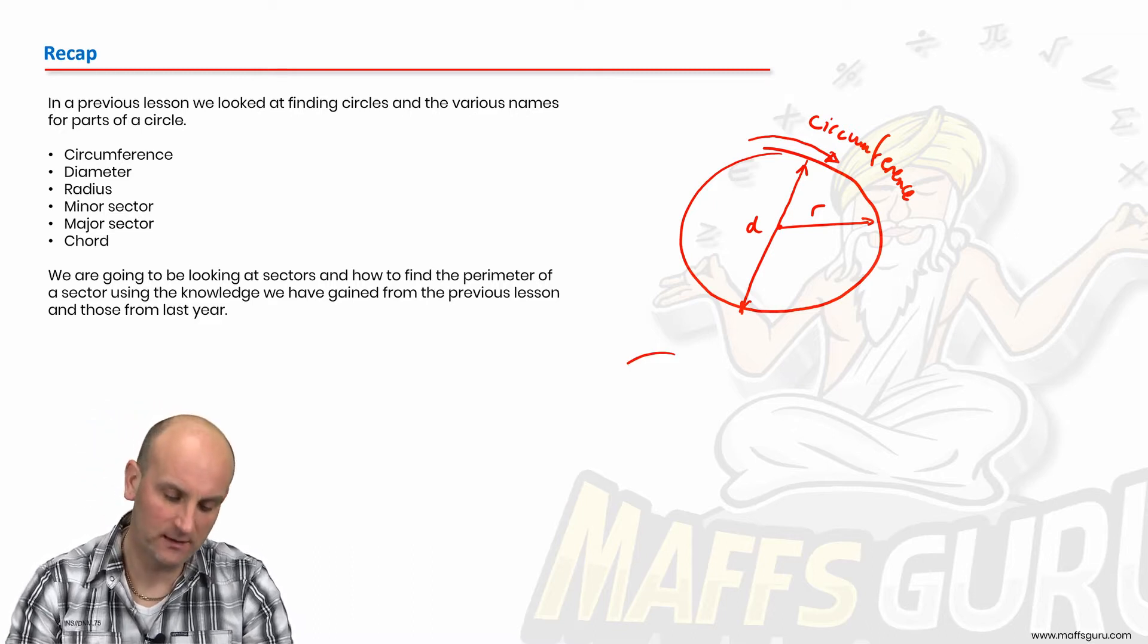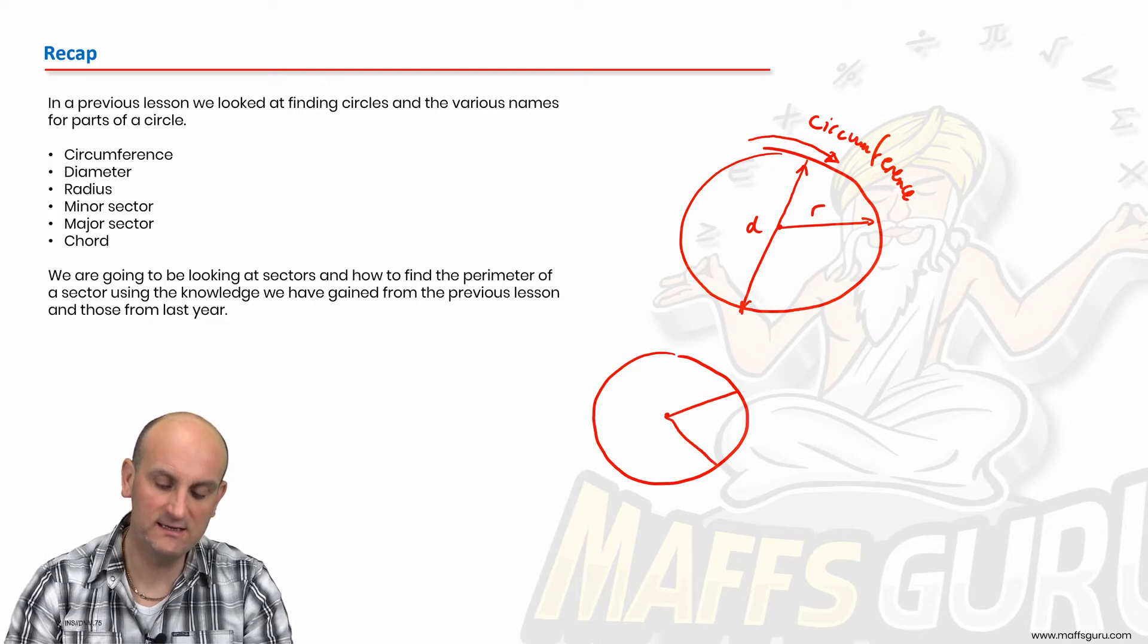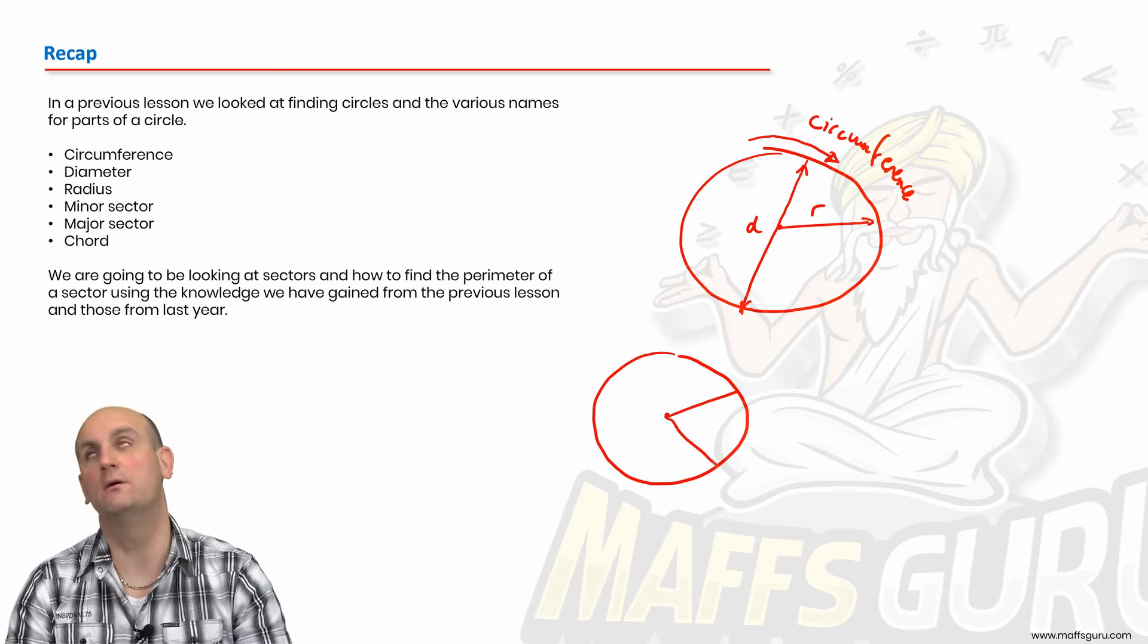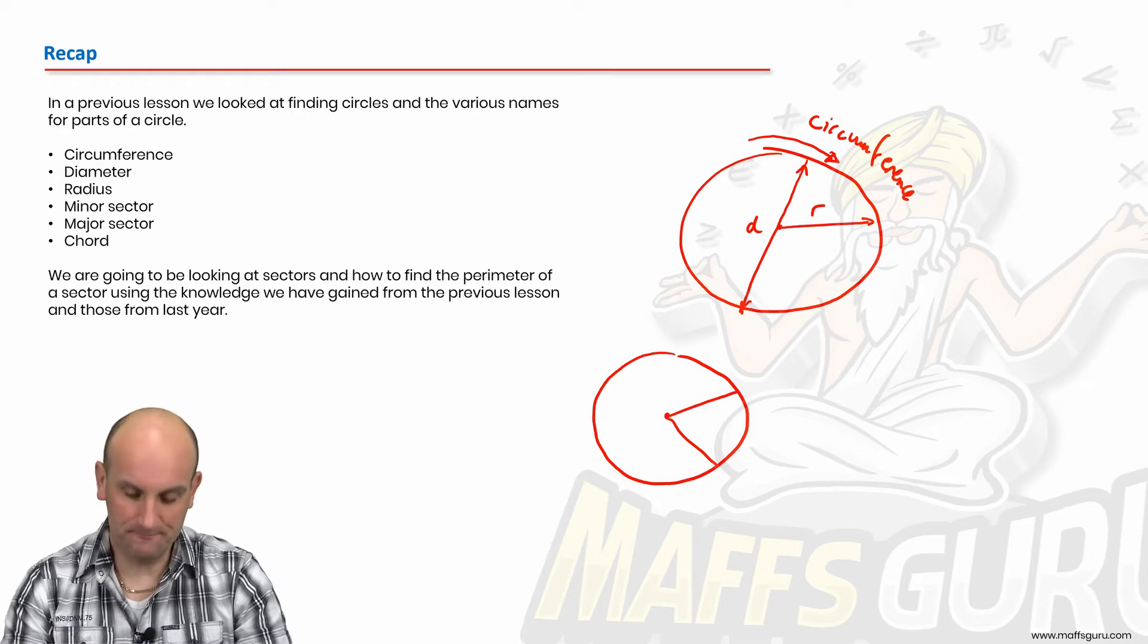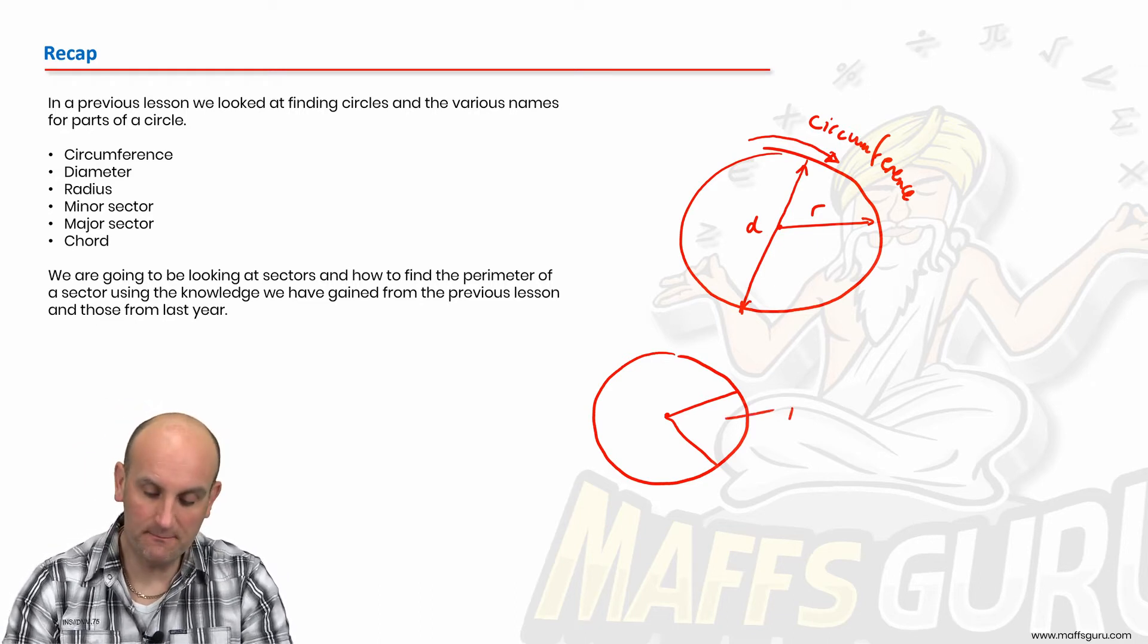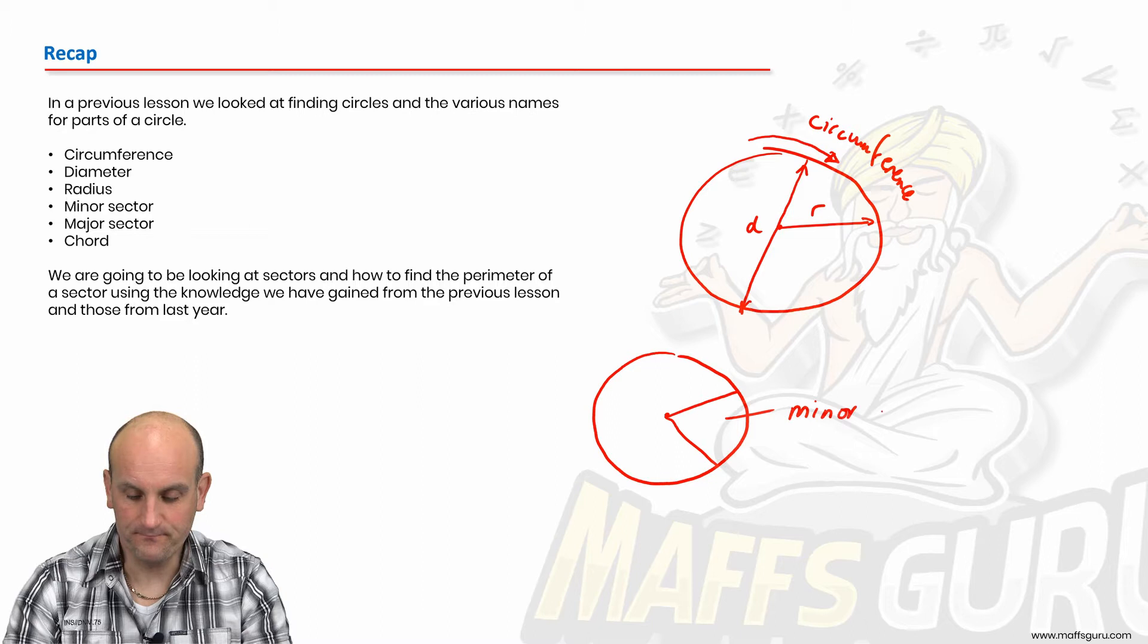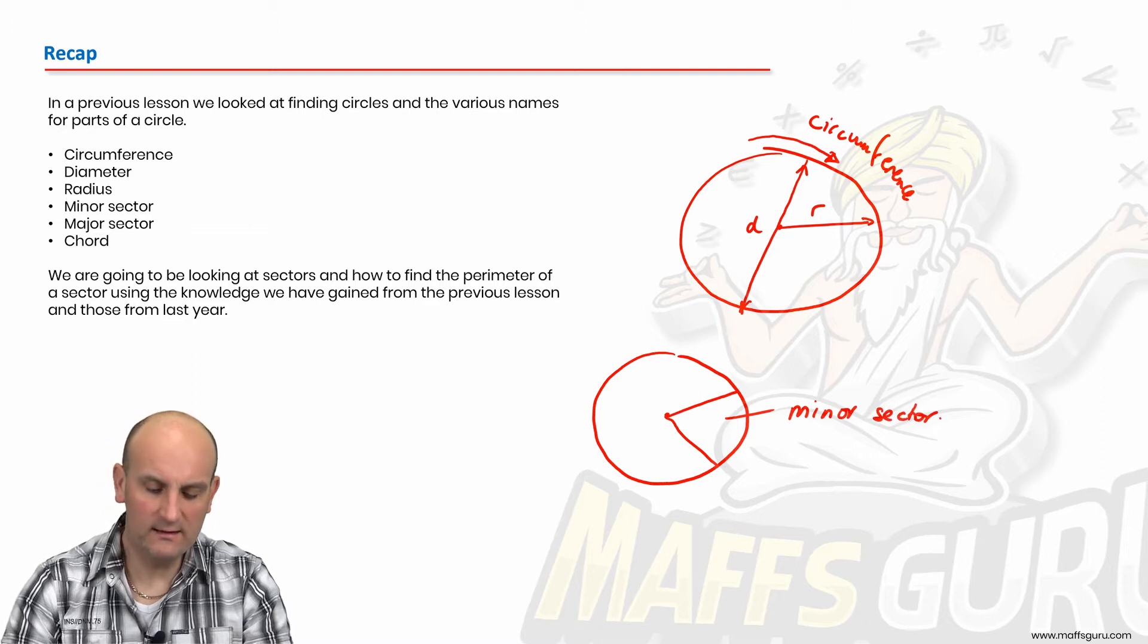Minor sector. Now in this situation, drawing a different diagram, a minor sector is basically nothing more than a pie slice. So hungry once again. So this one here is a minor sector.